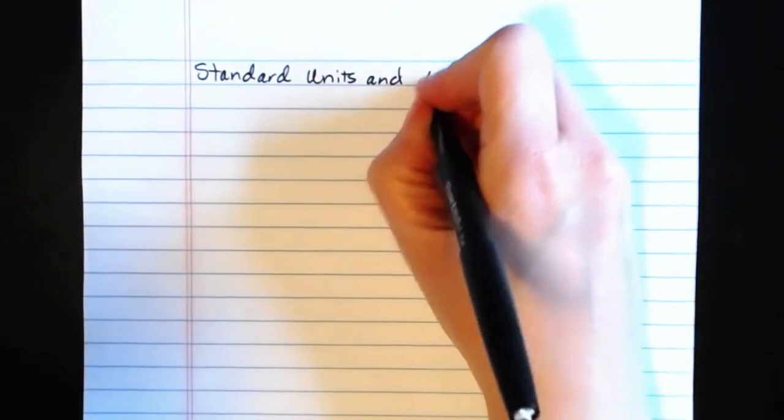In other words, when we can't use the empirical rule directly, how can we come up with probabilities for areas under the standard normal curve? Specifically, we're going to be looking at something called standard units and areas under the standard normal curve.